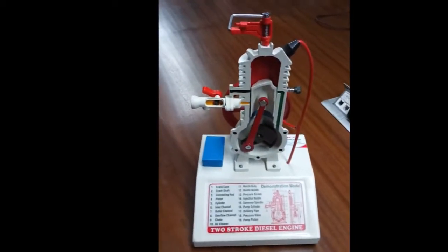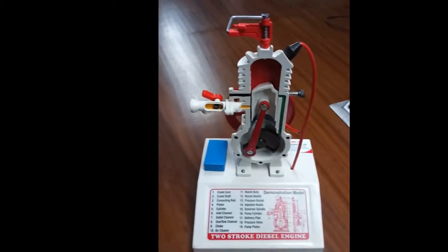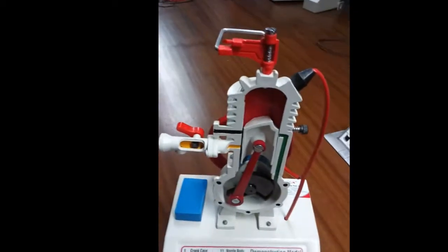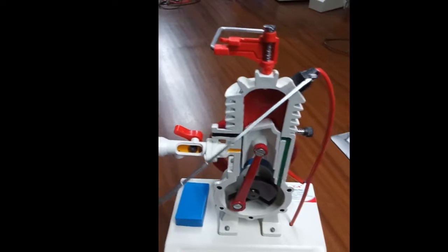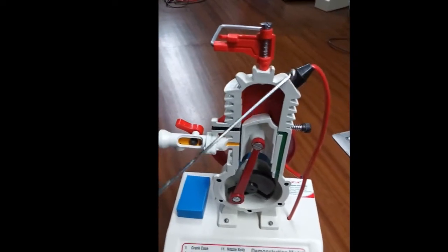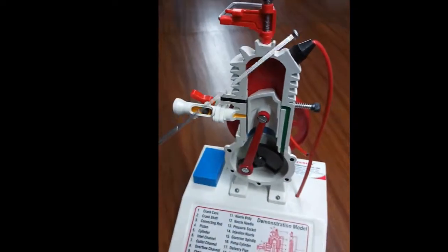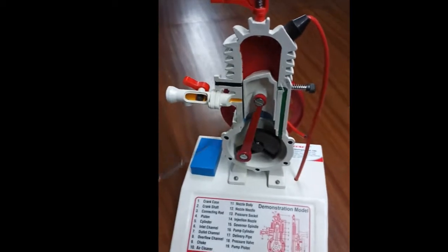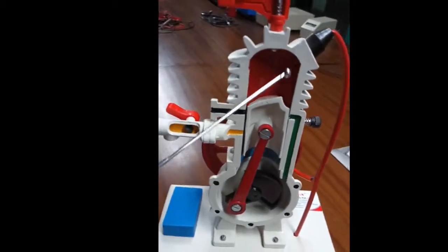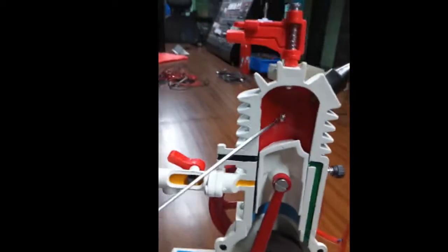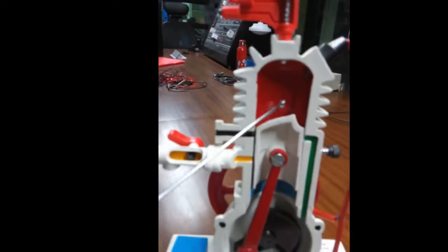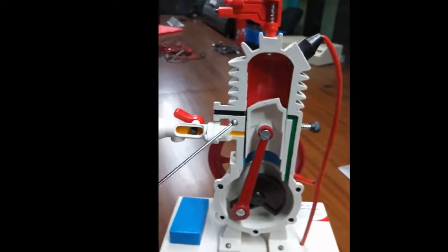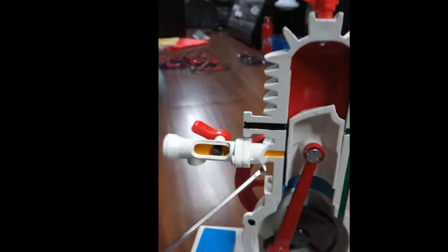This is a two-stroke diesel engine cut section model. Here this is the fuel injector and this is the injection nozzle. With the help of this injector and nozzle, fuel is injected here. From here the fuel is injected into the cylinder block.